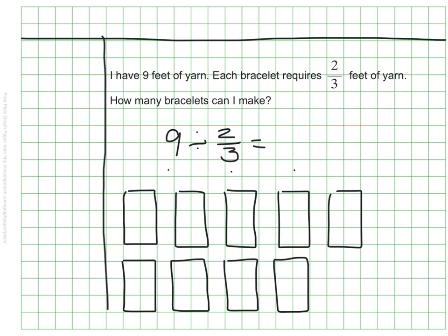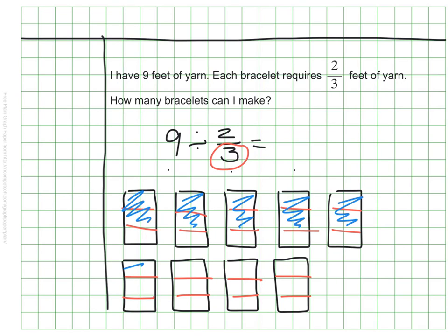I have my 9 wholes, representing my 9 feet of yarn. I need to break this into thirds because I'm looking for groups of 2 thirds. So I'm going to start by just breaking this up into thirds. I'm looking for groups of 2 thirds. So I'm going to mark off 2 thirds at a time and see how many groups of 2 thirds there are in my 9 whole feet.